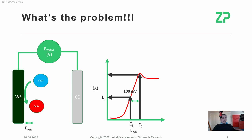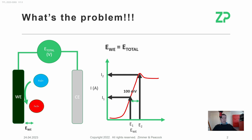This really plays into a reproducibility problem. In a potentiostat, there's a reference electrode that allows us to know the potential at the working electrode and overcome otherwise reproducibility problems. The working electrode potential is equal to the potential that we apply between the two electrodes minus all the losses in potential along the way.